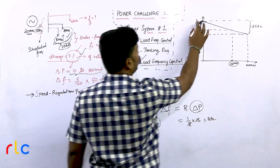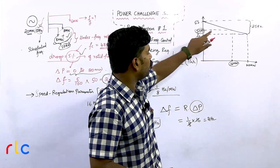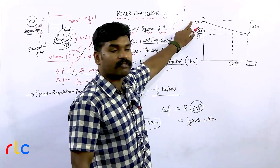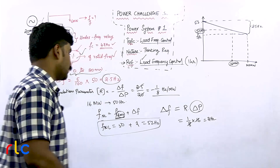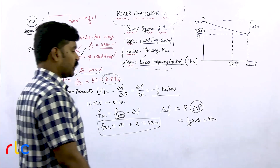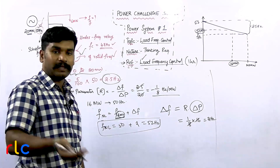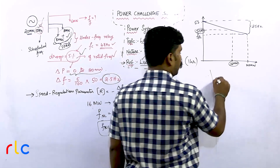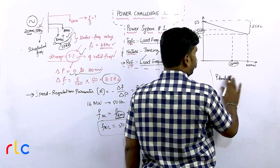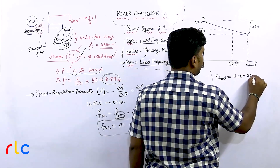So the no-load frequency of this particular generator is 52 hertz. When operating at 16 megawatt, frequency is 50 hertz; when operating at no load, frequency is 52 hertz. Now, what I have to do is check: when I add the additional load of 6 megawatt, what is the frequency of the system? The new total load is 8 + 8 + 6 = 22 megawatt.